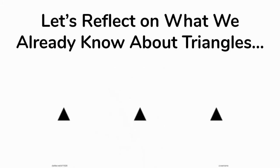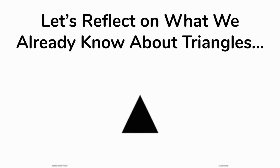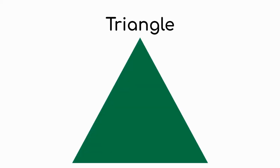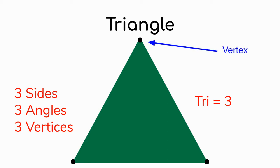Really fast, let's just reflect on what we already know about triangles from the earlier lesson that we did on polygons. A triangle has three sides, three angles, and three vertices. The prefix 'tri' means three. Just as a reminder, 'vertices' is plural — if we're only going to talk about one of them, we would call it a 'vertex.'